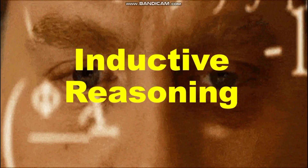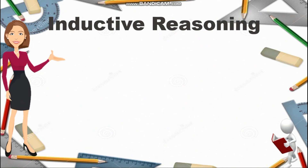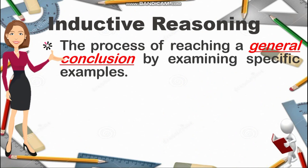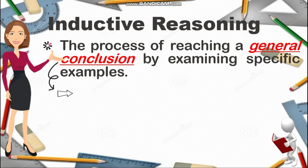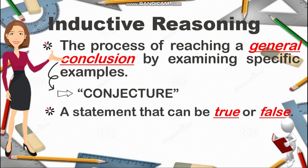Let us now move to inductive reasoning. Inductive reasoning is the process of reaching a general conclusion by examining specific examples. This general conclusion is called a conjecture, and a conjecture is a statement that can be true or false. Later on, we will know how to verify whether a conjecture is true or false.